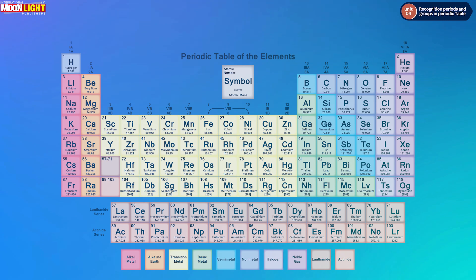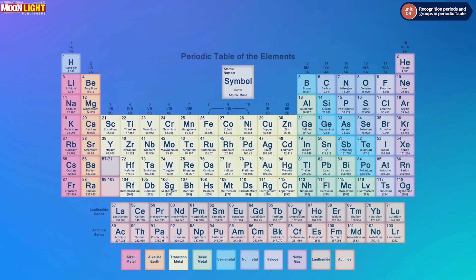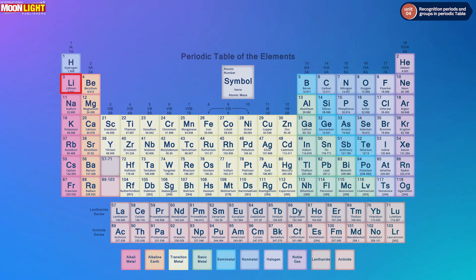If you look at hydrogen, the atomic number is 1. The next element is helium, with atomic number 2, and the first shell has 2 electrons. Next is lithium, which has 3 electrons. The first two electrons come to the first shell, and the next shell has 1 electron, giving a shell arrangement of 2, 1.